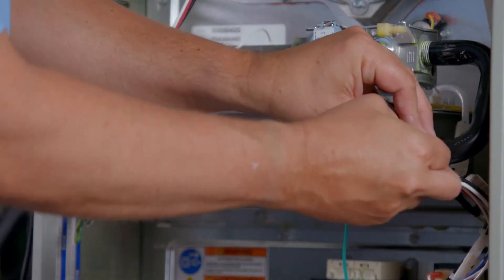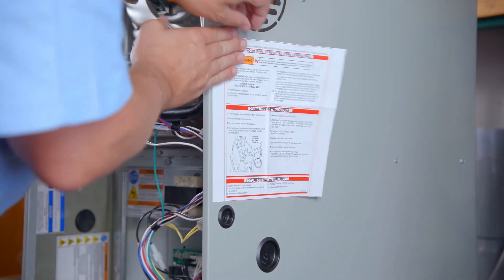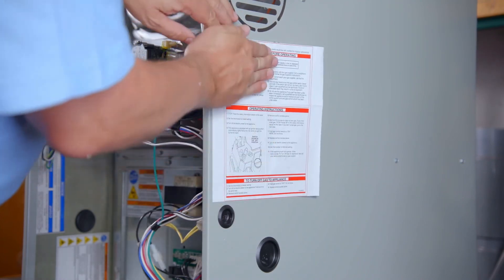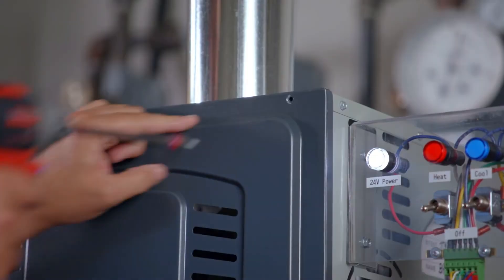Secure any loose wires. Place the included safety and operation adhesive label on the furnace. Reinstall the access panels.